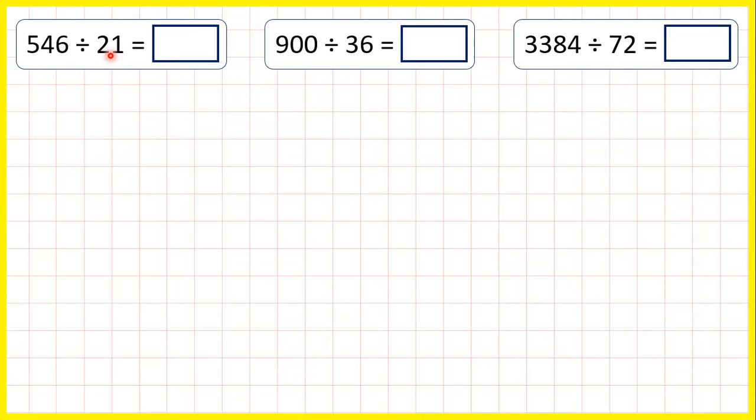So if we look at our divisor, 21 is 3 times 7. So what we can do, instead of dividing by 21, we can divide our dividend, we can divide 546 by 3, then take our answer and divide it by 7.